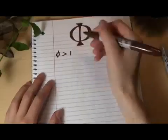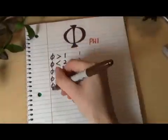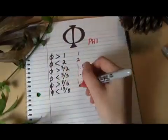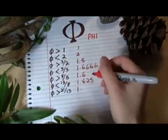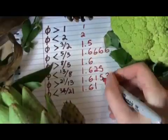It's more than 1, but less than 2. More than 3 over 2, less than 5 over 3. Greater than 8 over 5, but 13 over 8 is too big. 21 over 13 is just a little too small, and 34 over 21 is even closer, but too big, and so on.